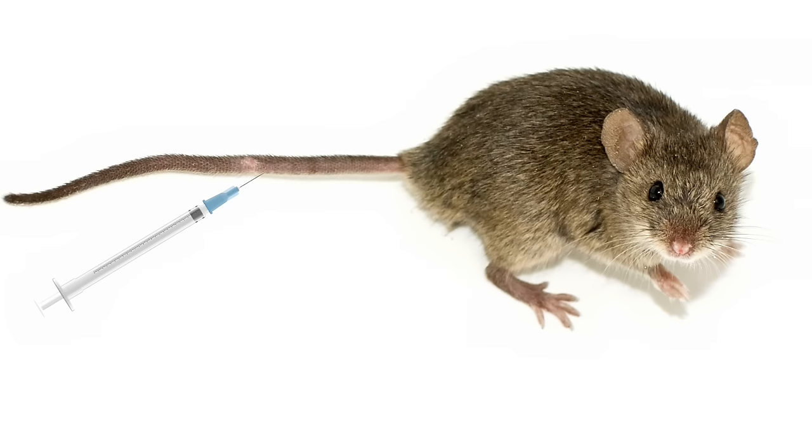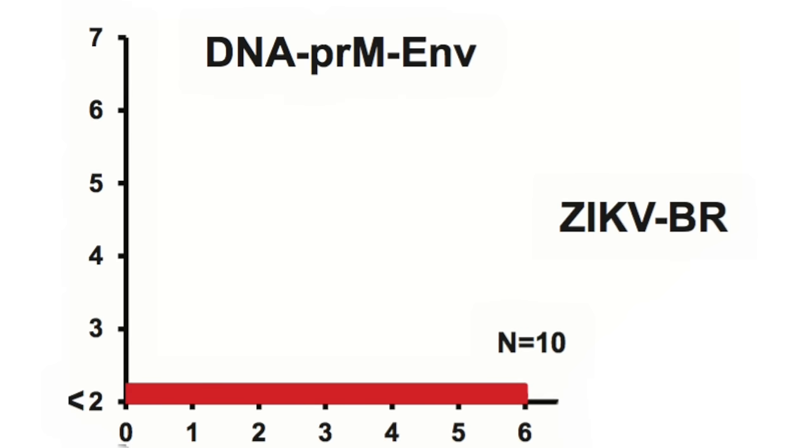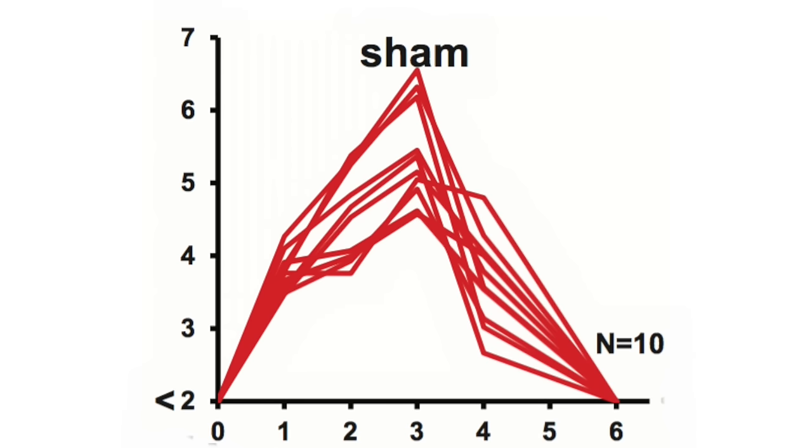Immunized mice were then inoculated intravenously with 100 plaque-forming units of Zika virus, either a Brazilian or a Puerto Rican isolate. No virus in the blood was detected in immunized animals that had received the DNA. In contrast, animals that were not inoculated or who received DNA vector alone developed high levels of Zika virus in the blood.